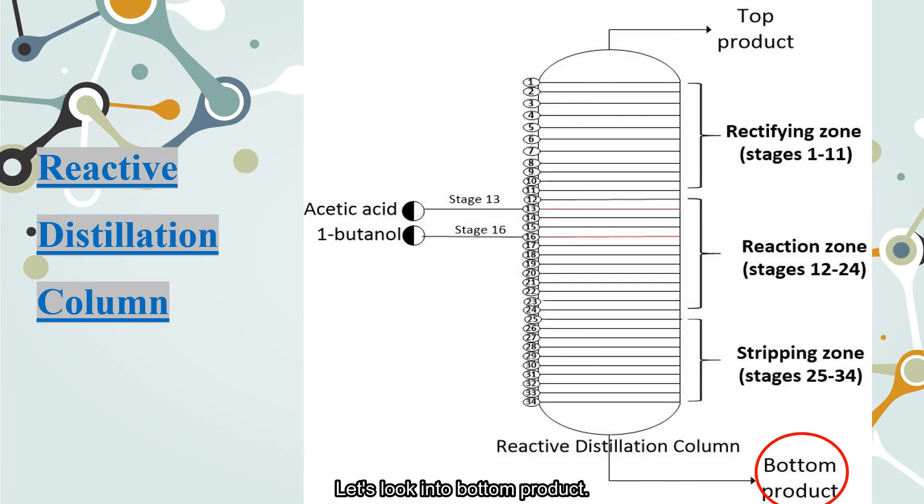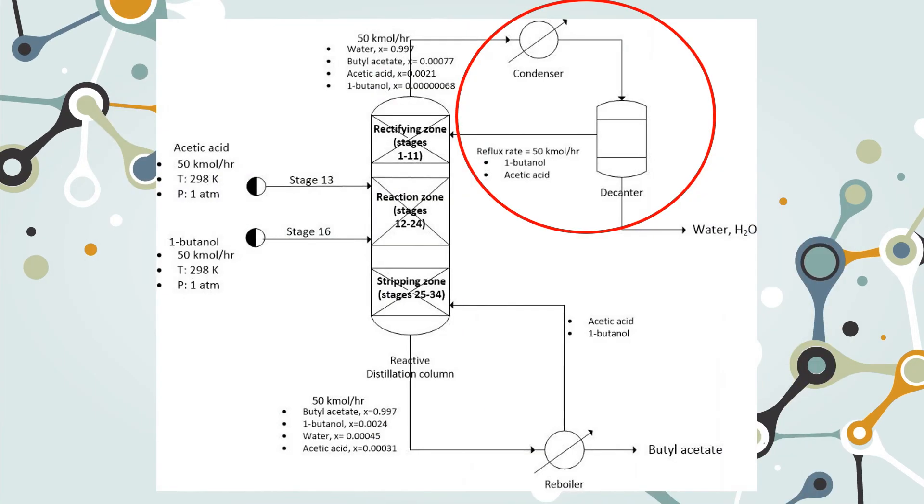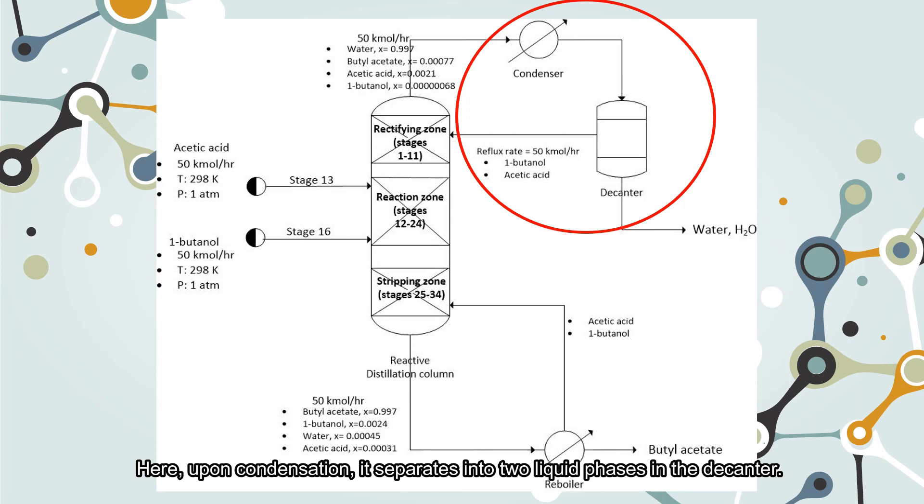Let's look into the bottom product. From the bottom product of the reactive distillation column, butyl acetate is obtained. Here upon condensation, it separates into two liquid phases in the decanter. The organic phase consists of butyl acetate, butanol, and acetic acid which is refluxed back to the column, whereas the aqueous phase, mainly water, is removed as a distillate.